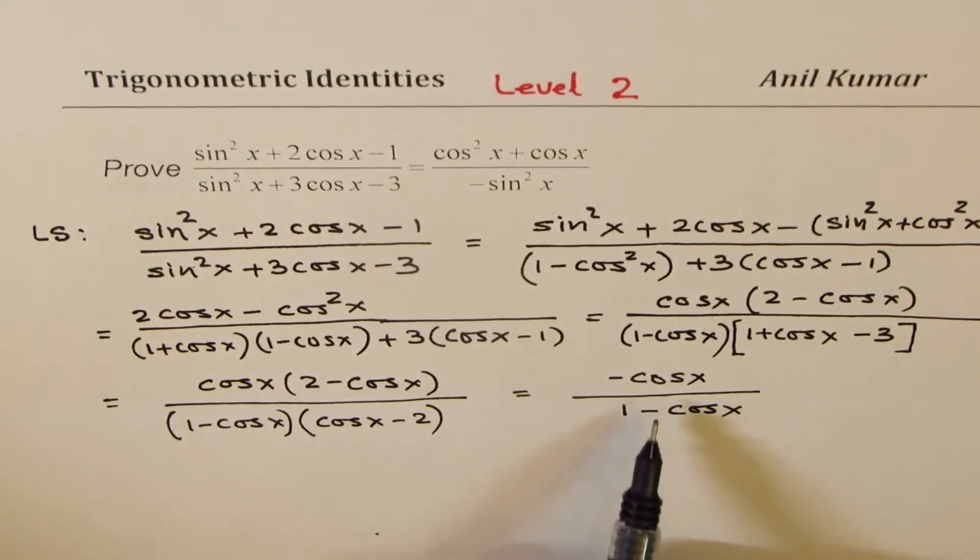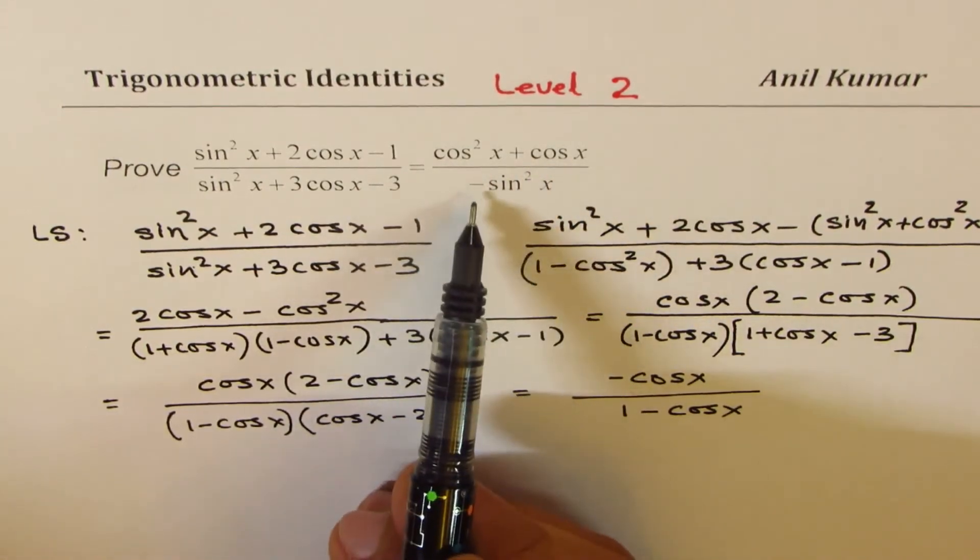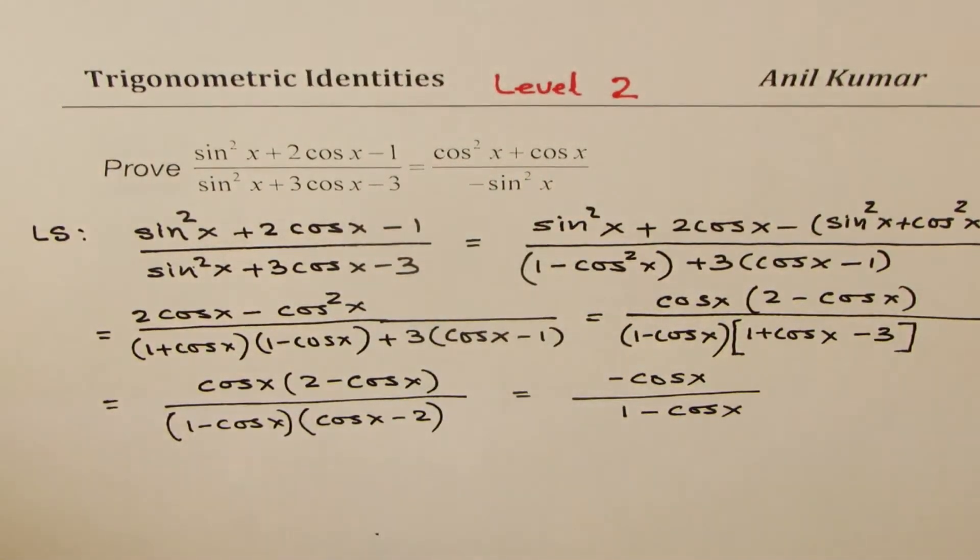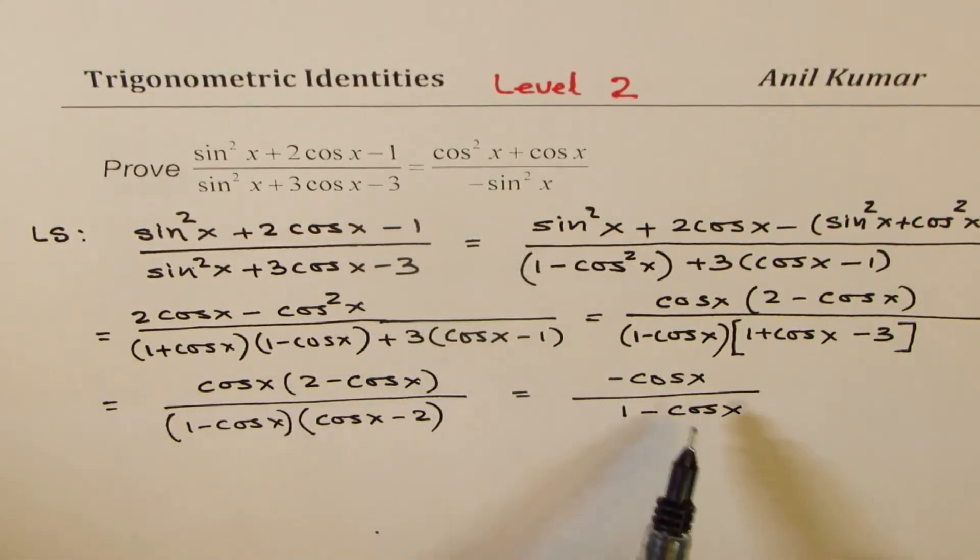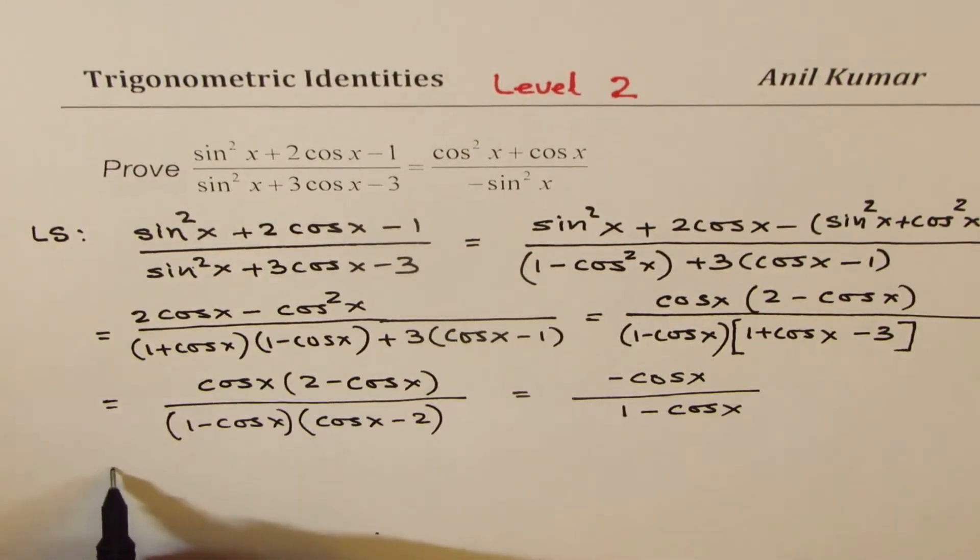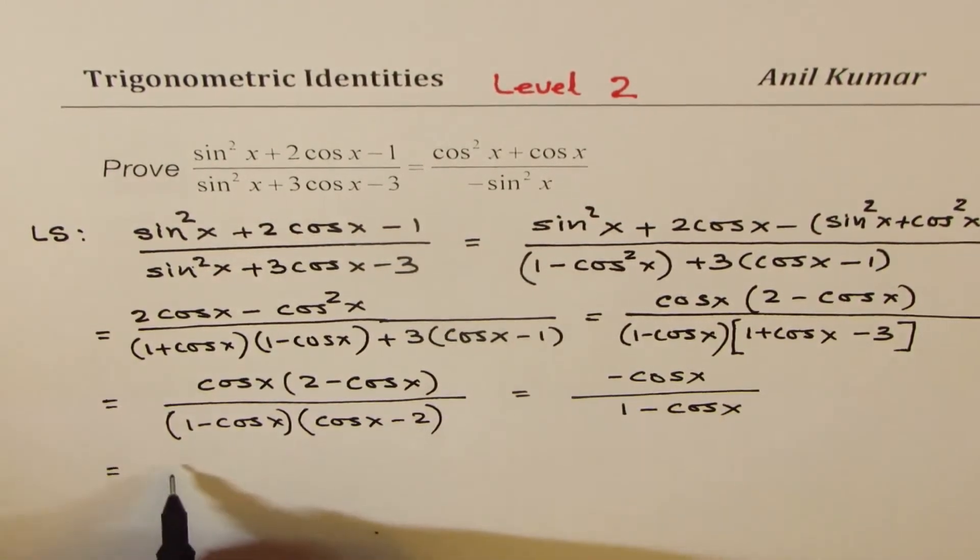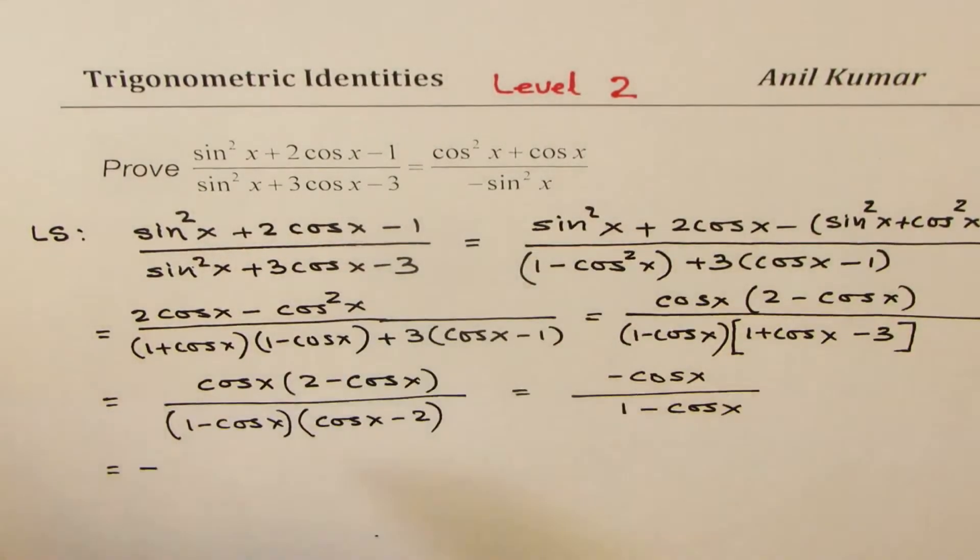You really want to show that this is equal to the right side, which is cos²x + cos x divided by -sin²x. How do I get sin²x? Well, let's rationalize it. Rationalize really means that, let me do it here. So we could actually copy this expression. Let me write minus outside.